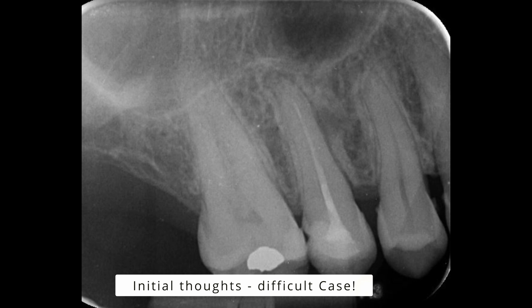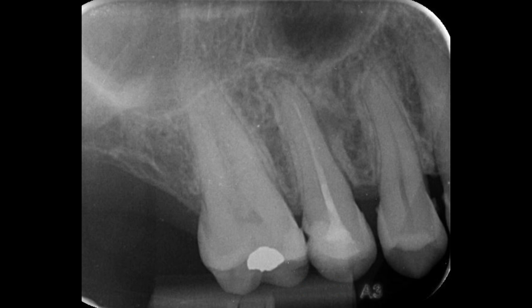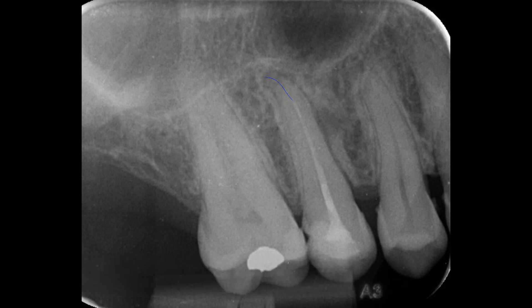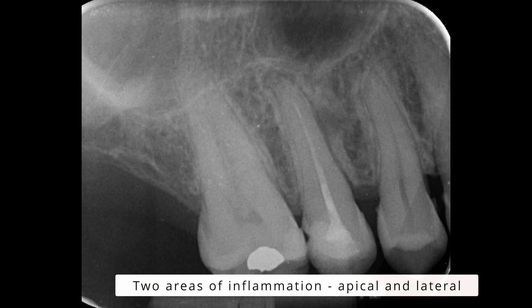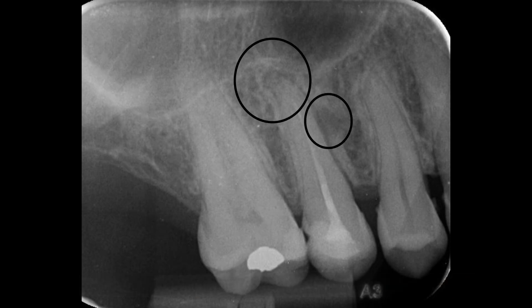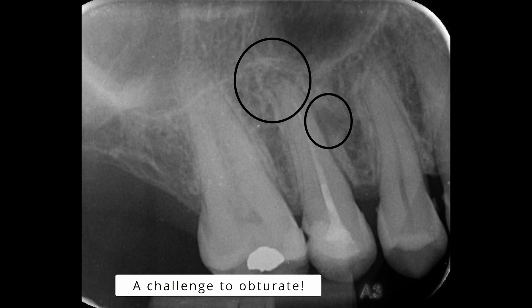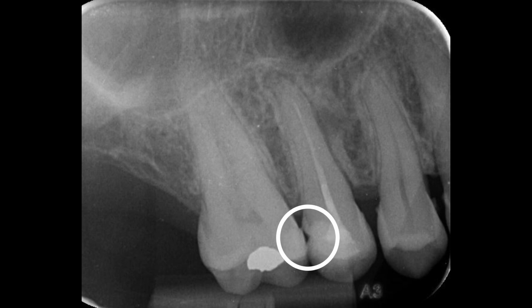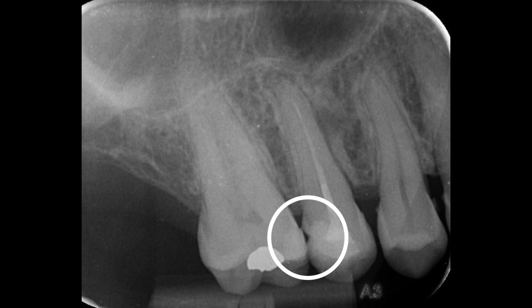First impressions on the pre-op radiograph: this was sent to me by a referring dentist and my initial impression is that this tooth is quite a difficult one to treat. When I look at a tooth needing re-root treatment, I need to see canal space apical to where the tooth has been previously operated. If you can't see that space, you're in difficult territory. We can also see inflammation apically and laterally on the upper right five, so I'm thinking straight away there is some kind of lateral canal. Distally the tooth is quite deep, quite close to the alveolar ridge, which is also ticking along in the back of my mind.